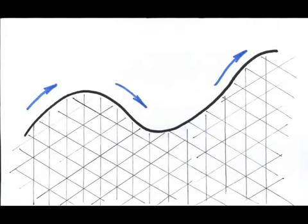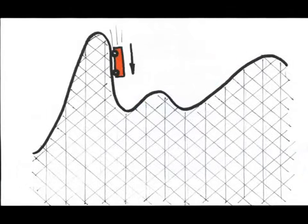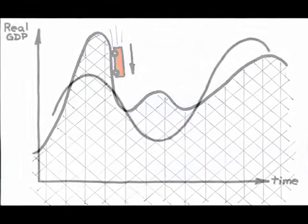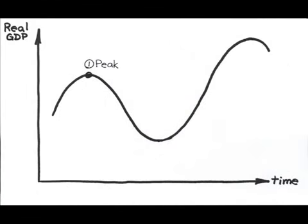The stages of a business cycle are always the same, although the length and severity of the swings are not. Let's say that we start at the peak or high point of a cycle. The peak is followed by a downturn in the economy, declining real GDP, or a recession. Eventually, the real GDP hits its low point for that cycle,